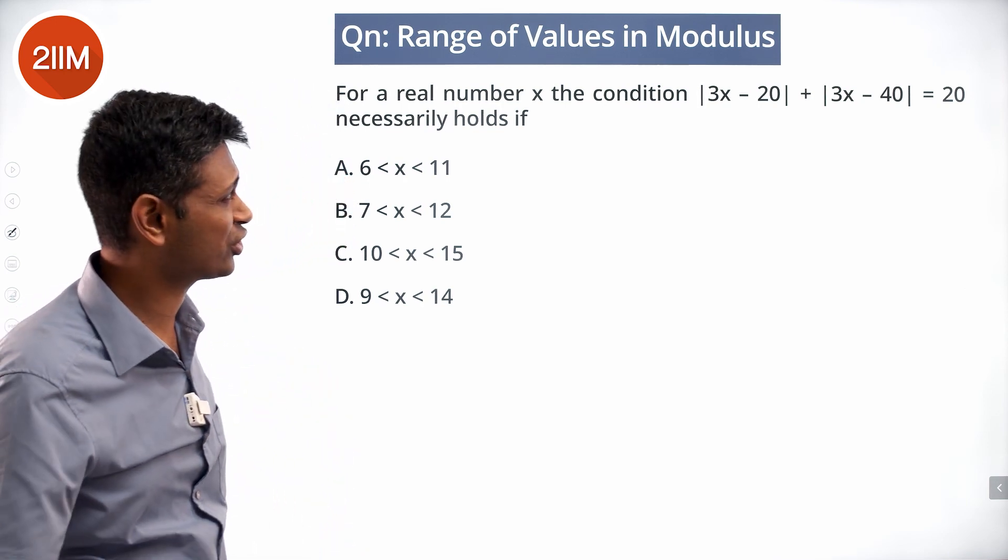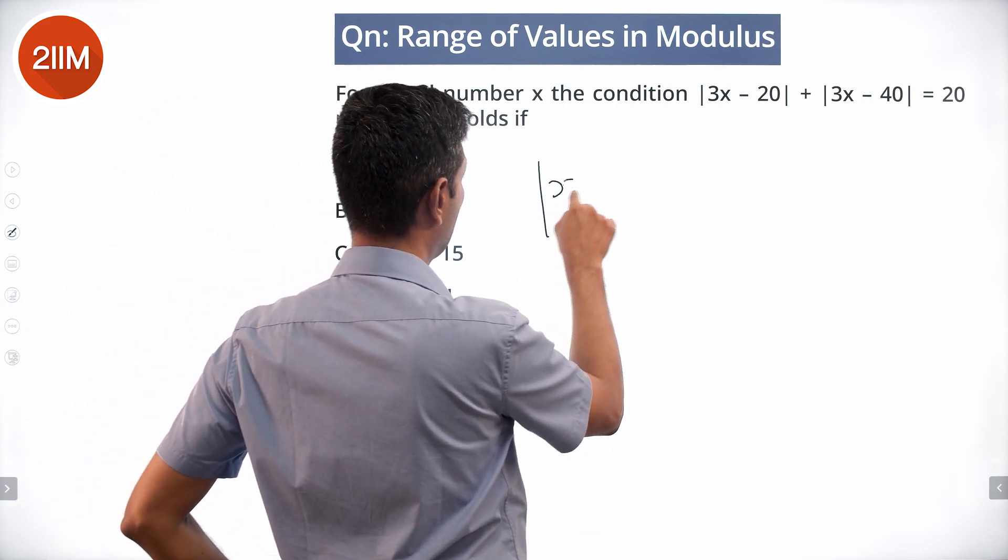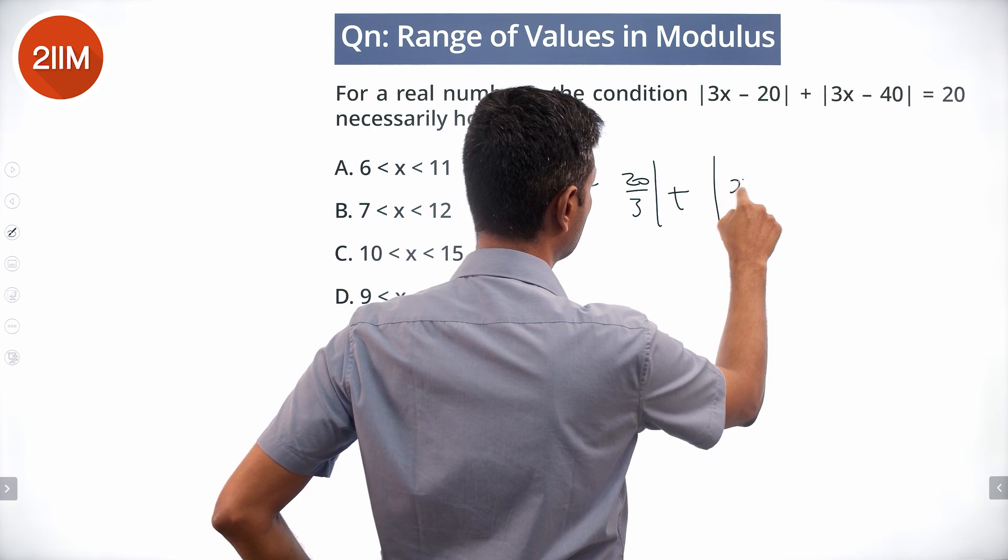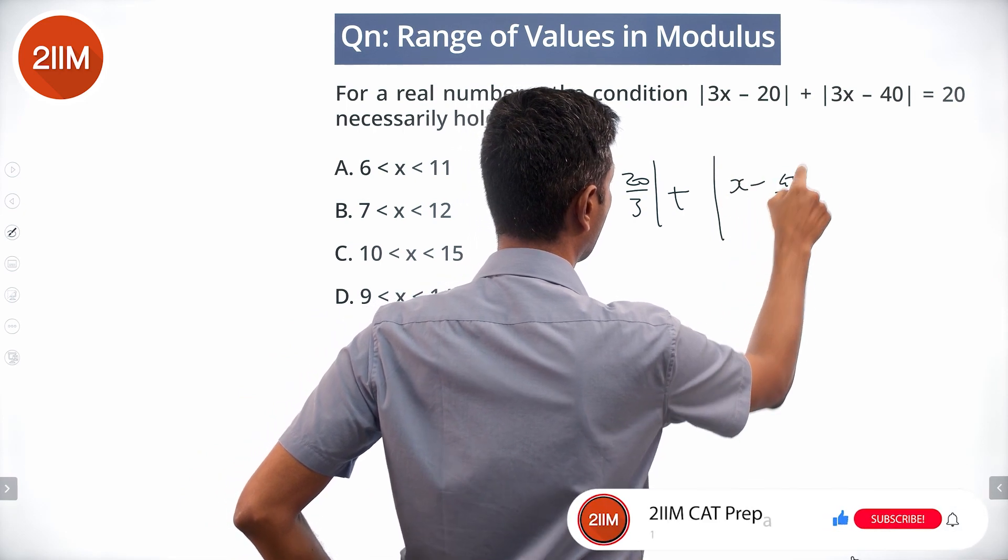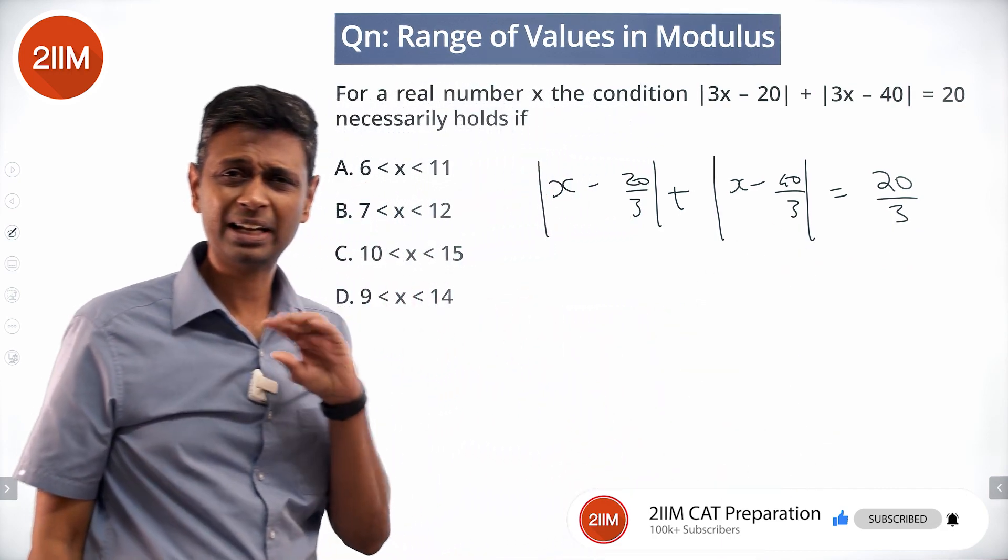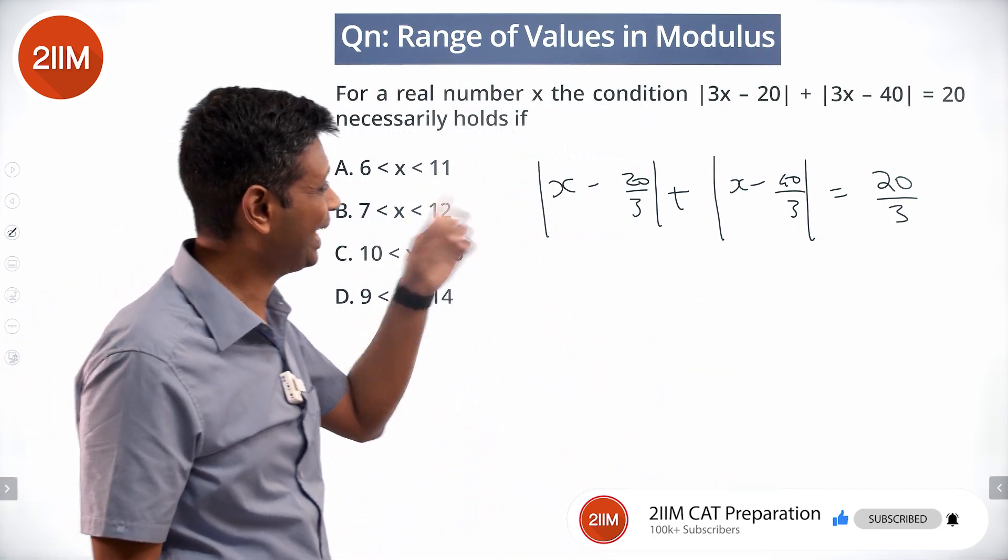Wonderful, I will first simplify this and say modulus of x minus 20 by 3 plus modulus of x minus 40 by 3 equal to 20 by 3. Divide by 3 throughout to make life simpler for ourselves dealing with x.